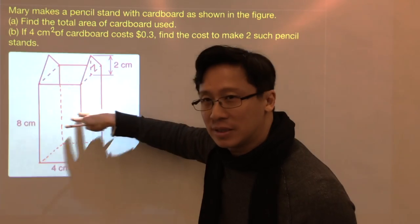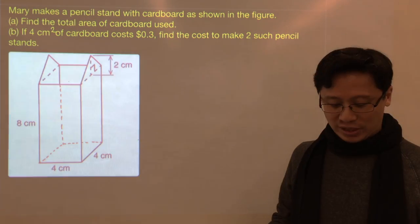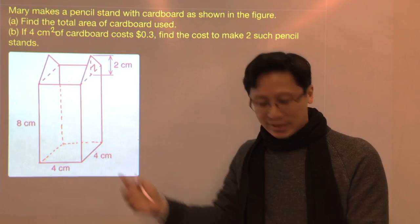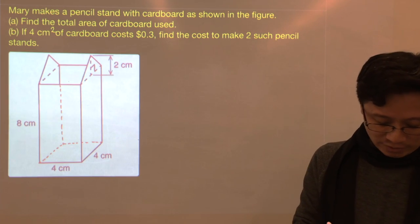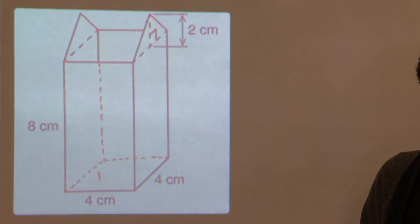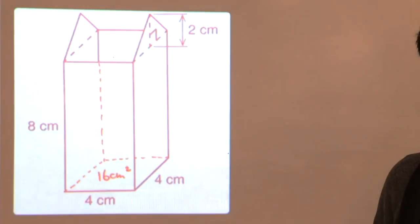So these are the lateral faces. We can still find the sum of the areas of all the faces involved. The base will be, let's say this is 4 cm by 4 cm, this will be 16 cm square.